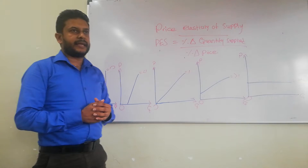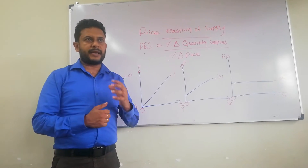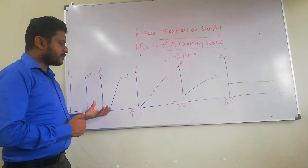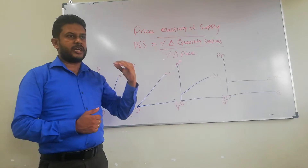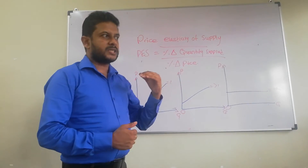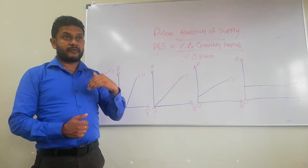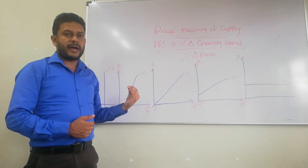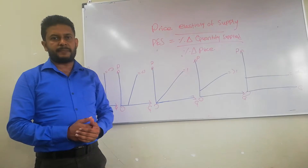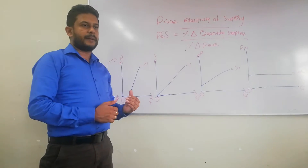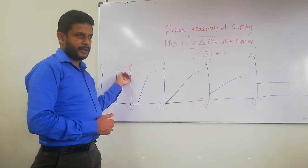Firstly, we are talking about perfectly inelastic supply. Perfectly inelastic supply means the responsiveness of quantity supplied to a change in price is 0. Whether the price increases or decreases, quantity supplied will not respond. The elasticity value for perfectly inelastic supply is 0.